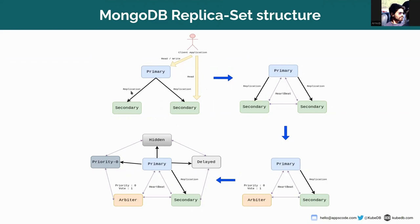You can see that there is a replication process going on from the primary to secondaries. In the replication process, the secondary is actually replicating the oplog from the primary, not the actual data. So if a client wants to execute some command on the primary, the secondary will actually replicate those commands and execute them on itself.